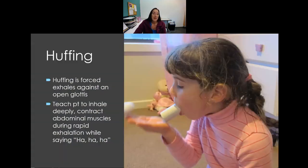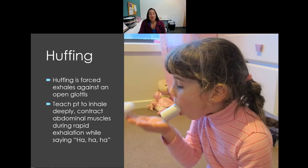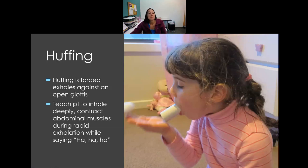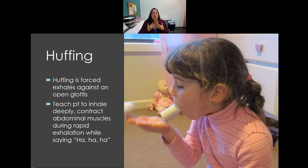Huffing is a forced exhalation against an open glottis. The patient inhales deeply, then contracts the abdominal muscles to produce a sharp 'huff' sound. This is one of the most effective ways to milk secretions from smaller airways to progressively larger airways until the patient feels the urge to cough. The cycle — huff until needing to cough, cough, then repeat — is done several times.